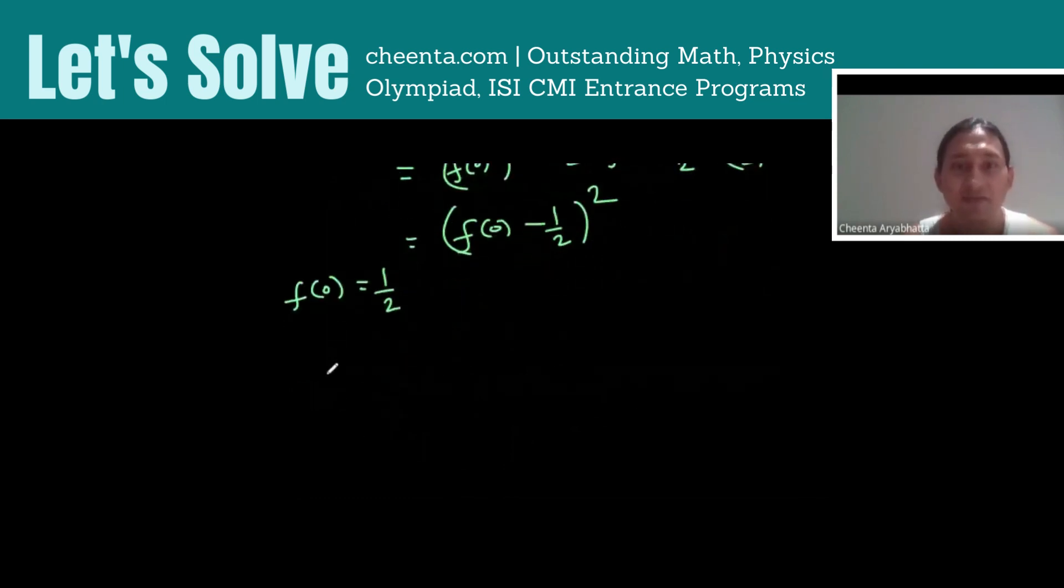Similarly, we have 0 ≥ (f(1) - 1/2)² for the same reason, which means f(1) is also equal to 1/2, equal to f(0).